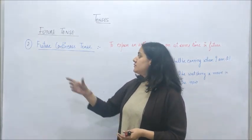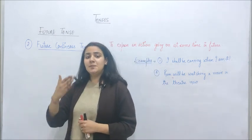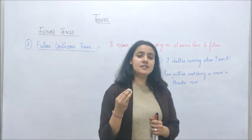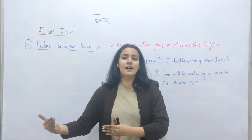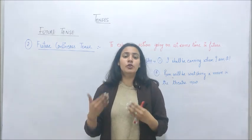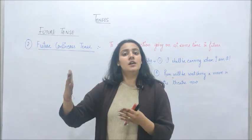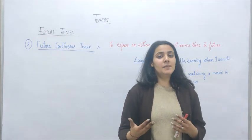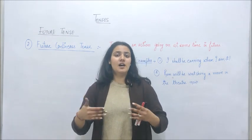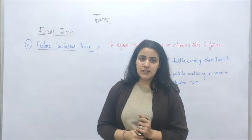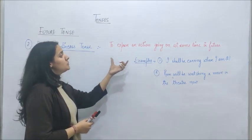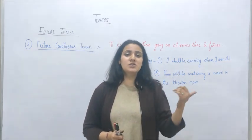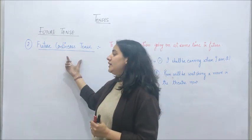The second type of future tense is future continuous tense. If we talk about past continuous tense, it showed actions that were ongoing in the past. But future continuous tense talks about those actions that are going on at some time in the future. As you can see in the definition: it is used to express an action going on at some time in the future. We use future continuous tense to indicate such ongoing future actions.